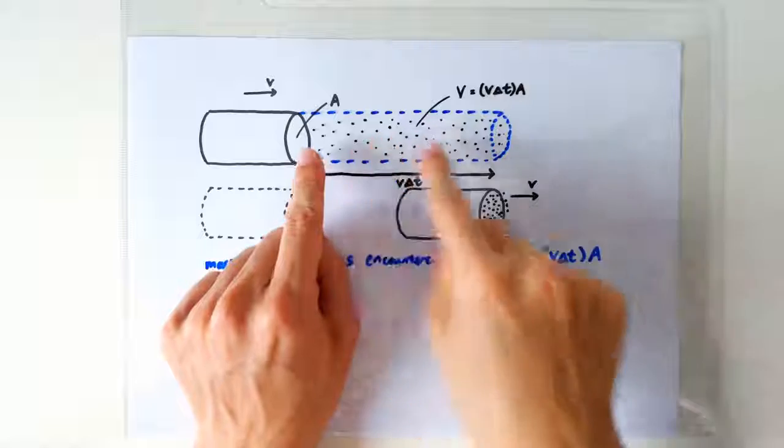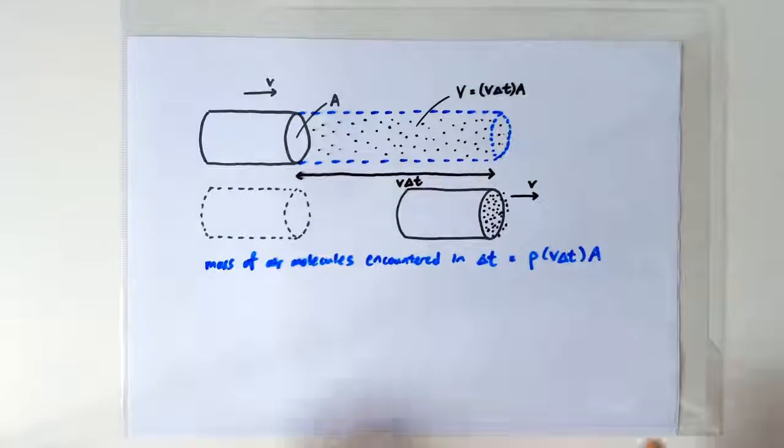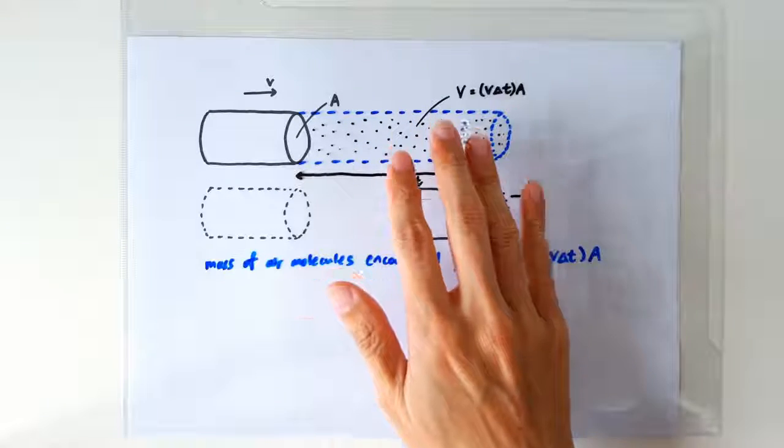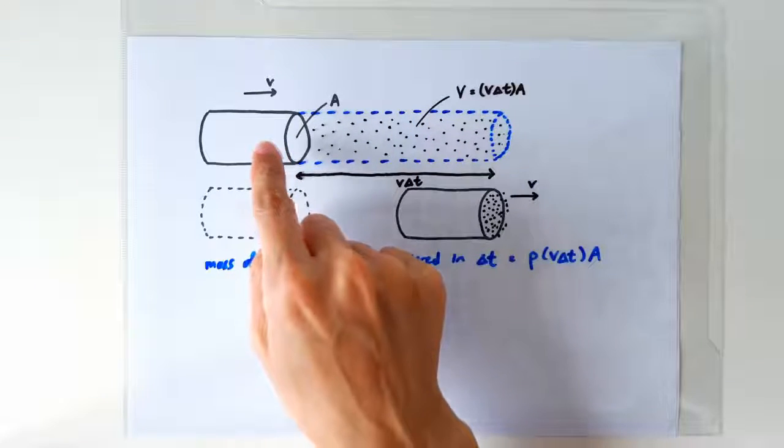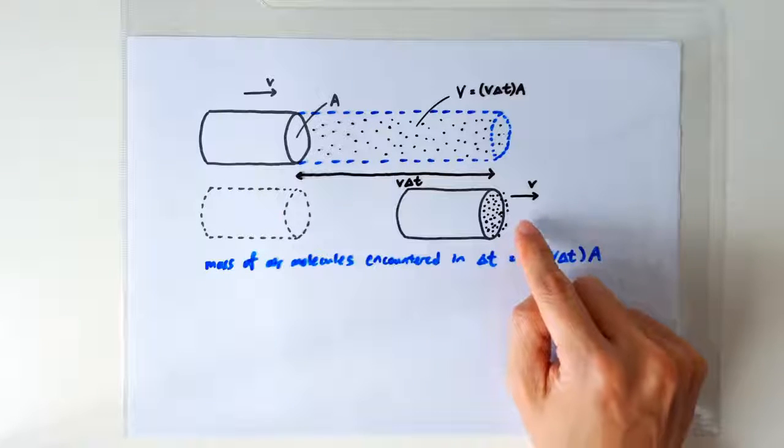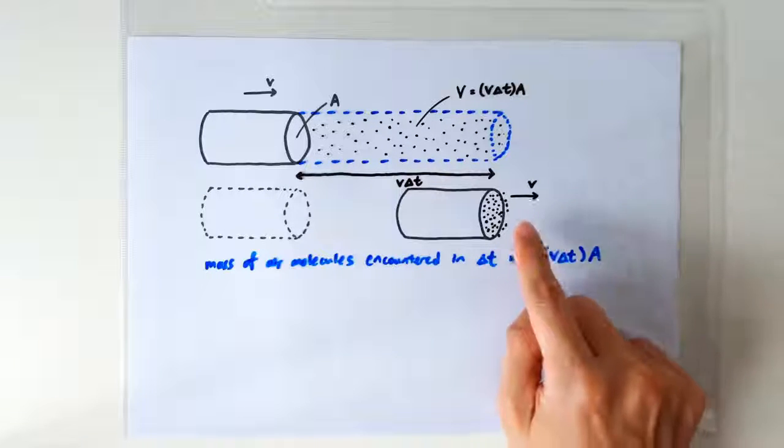So what happened to all these air molecules? Let's just make a very simplistic assumption that all these air molecules got pushed by this cylinder so they also attained the speed of V, same velocity as the cylinder.